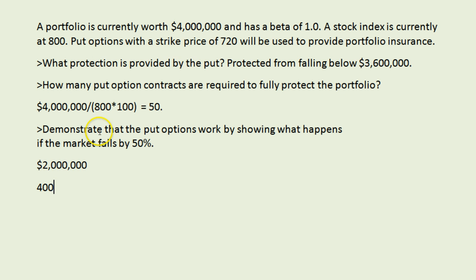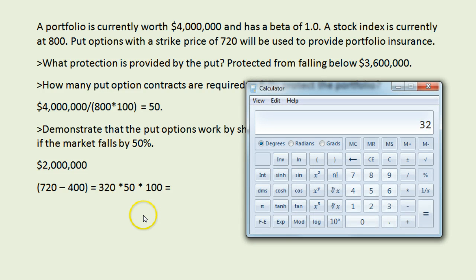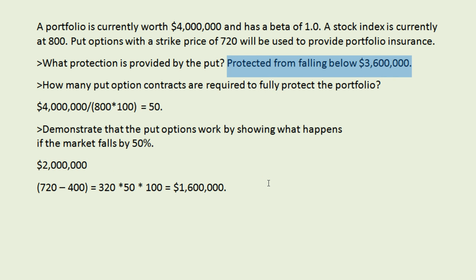We have a put option with a strike price of 720, so that is going to pay off the difference. We've gone below the strike price by 320, and we've used 50 contracts each representing 100 shares. So 320 times 50 times 100 is 1.6 million. Our portfolio is worth 2 million and we've made 1.6 million on the put, for a total of 3.6 million — which is exactly what we said the put will protect us from falling below.